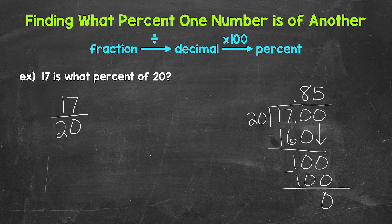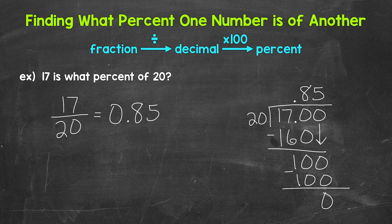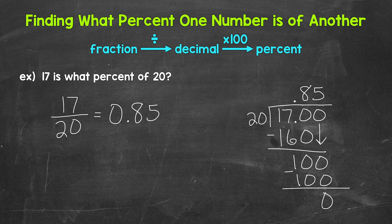85 hundredths. So 17 over 20 or 17 divided by 20 equals 85 hundredths. Now we need to convert that decimal to a percent by multiplying it by 100. And a quick way to do that is to move the decimal twice to the right.